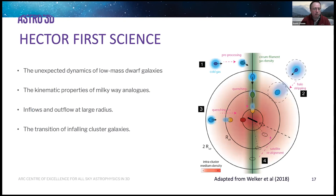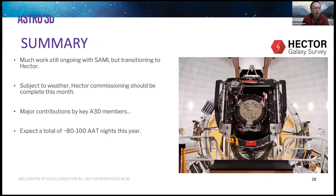What we're currently focusing on is Hector First Science: looking at low-mass dwarf galaxies, kinematic properties of Milky Way analogues, inflows and outflows at large radius using the bigger IFU views, and transitioning galaxies infalling from large radius. The most exciting thing is this massive transition from SAMI to Hector — we'll be getting something like 80 to 100 nights per year on the AAT over the next few years to make huge headway into the Hector survey. There's much work to be done.